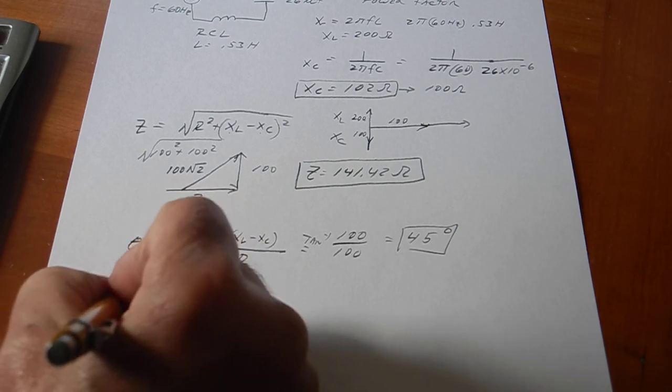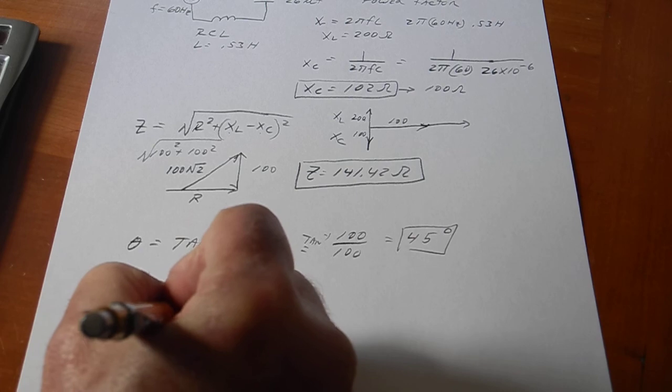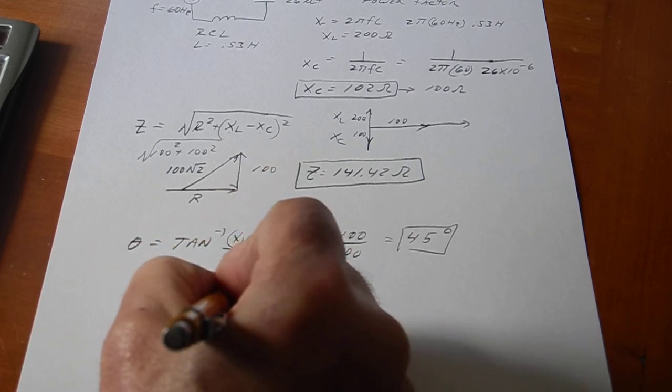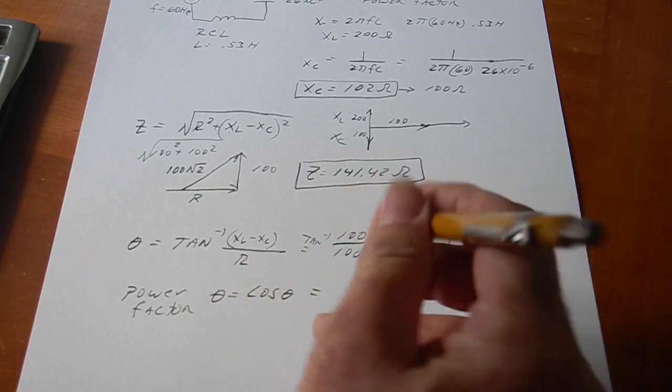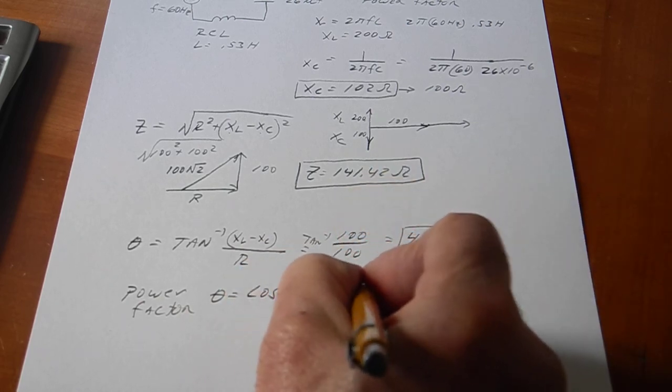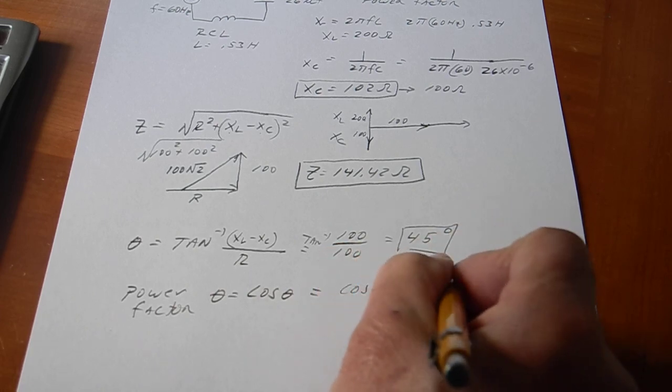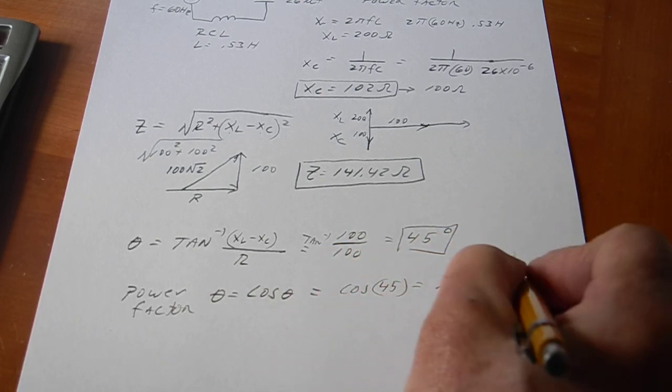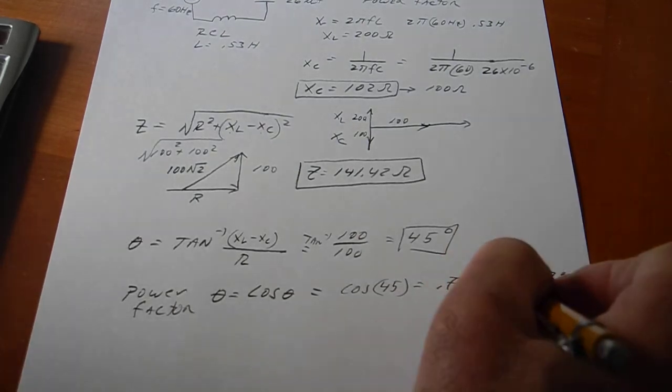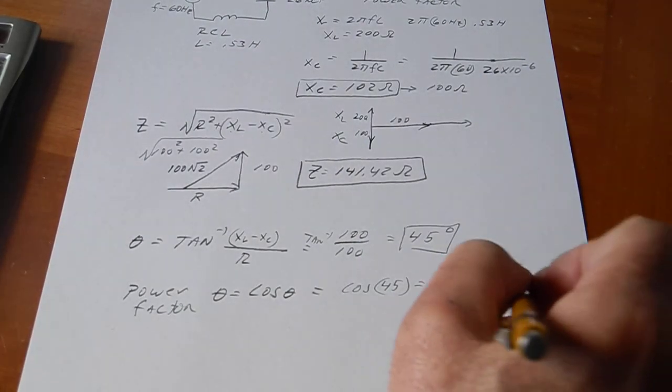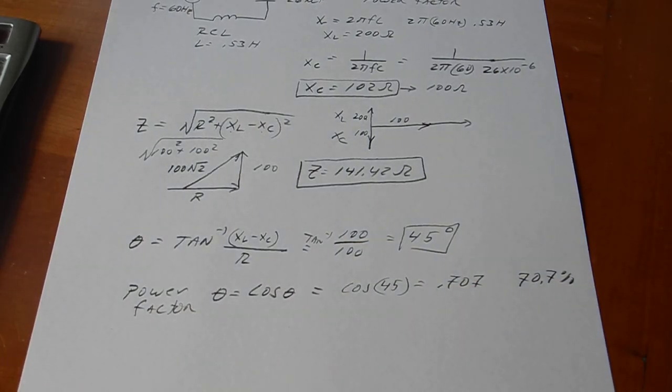And so, the power factor is equal to the cosine of theta, which is equal to cosine of 45, and cosine of 45 is 0.707. So, that's 70.7%. So, we're losing roughly 30% of our power because we're out of phase. But maybe we want to be out of phase for reasons that we'll learn about later.